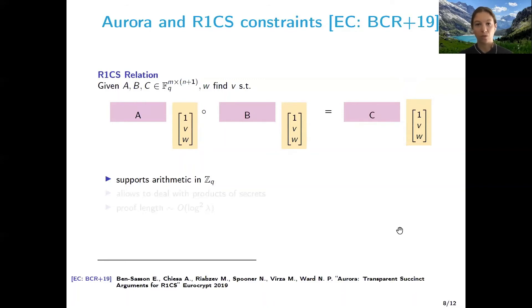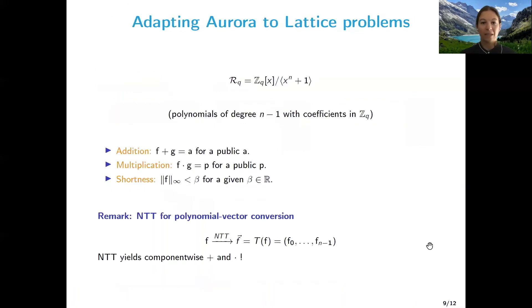And the bright side of this is that it supports arithmetic in ZQ, so we don't need to deal with the modular reduction. It allows to deal with products of secrets, thanks to the fact that it proves that the relation contains this component-wise multiplication, as we will see later. And the proof is very small, which is what we were looking for as lattices. Usually, lattice elements are pretty big and they usually yield pretty big proofs.